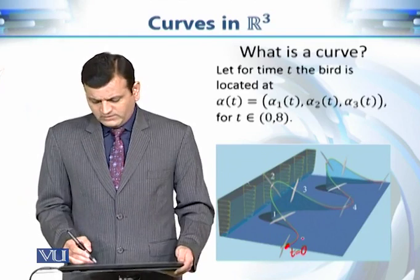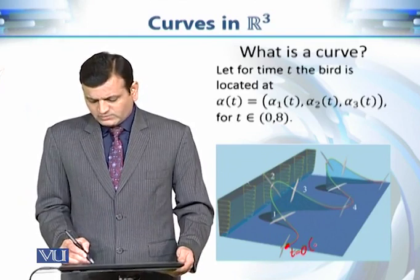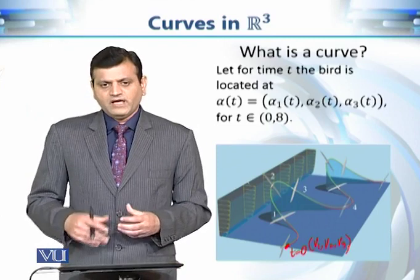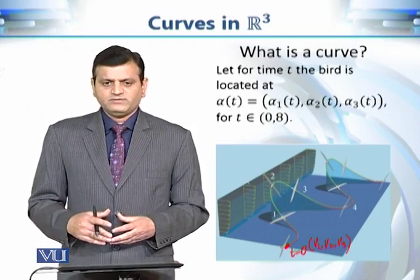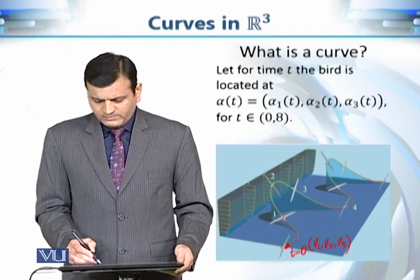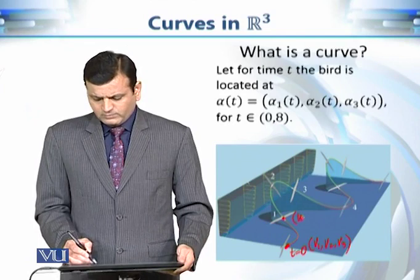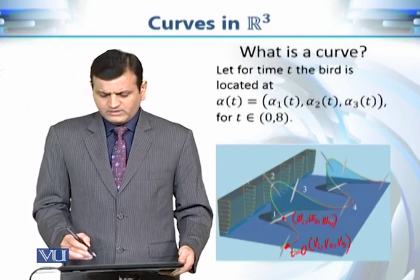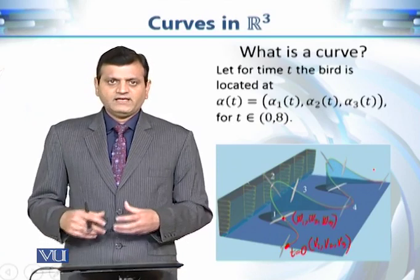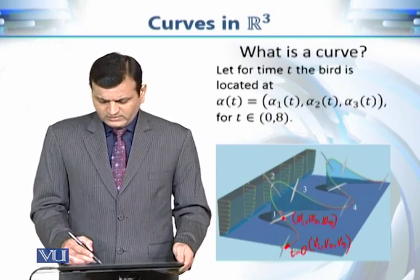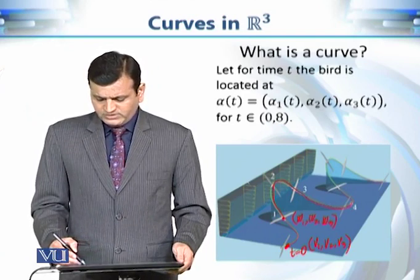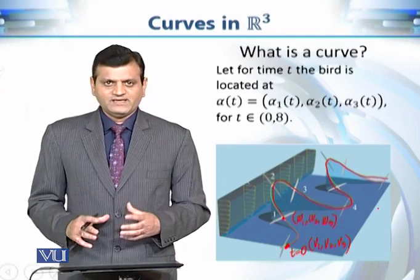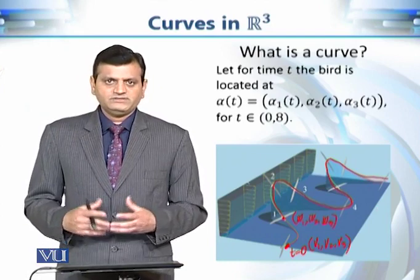That position can be described with the help of three coordinates. We can say it has coordinates v1, v2, v3. Then as time moves on — say after one minute — the bird will have some other position with coordinates w1, w2, w3. Similarly, as time continues to change, the trajectory changes and the position of the bird changes with respect to time. So we can say that the coordinates of the bird depend on time.